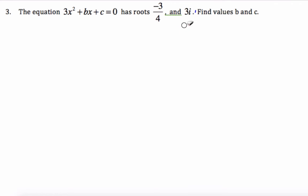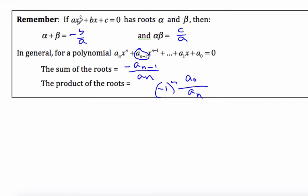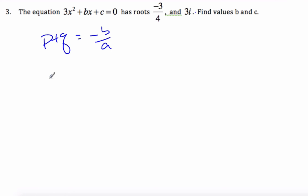So if I want to find b, I know that p + q is equal to minus b over a. And I know that from here. Well, p and q are -3/4 plus 3i is equal to minus b, which I do not know. And a is 3.